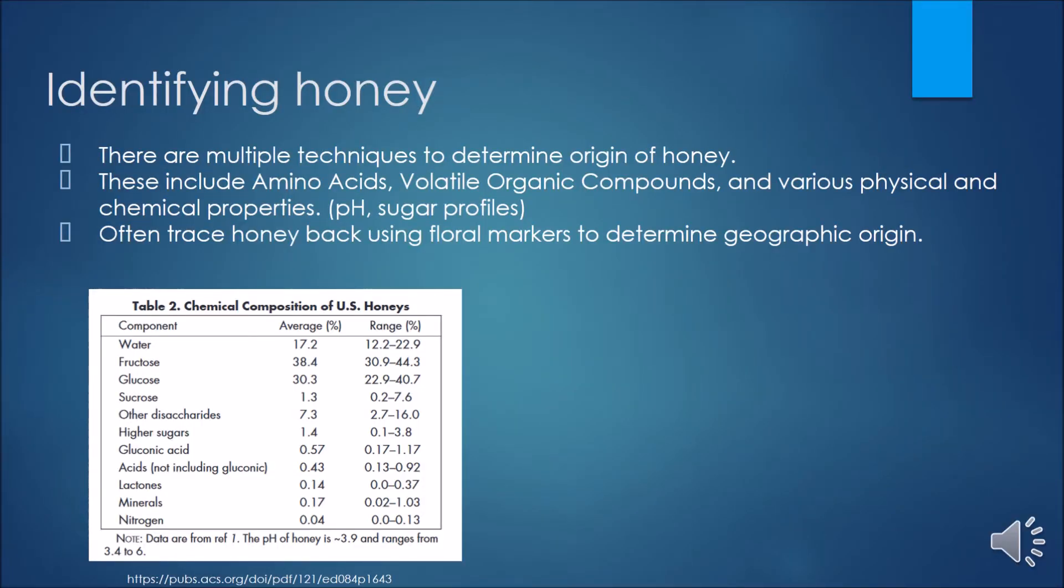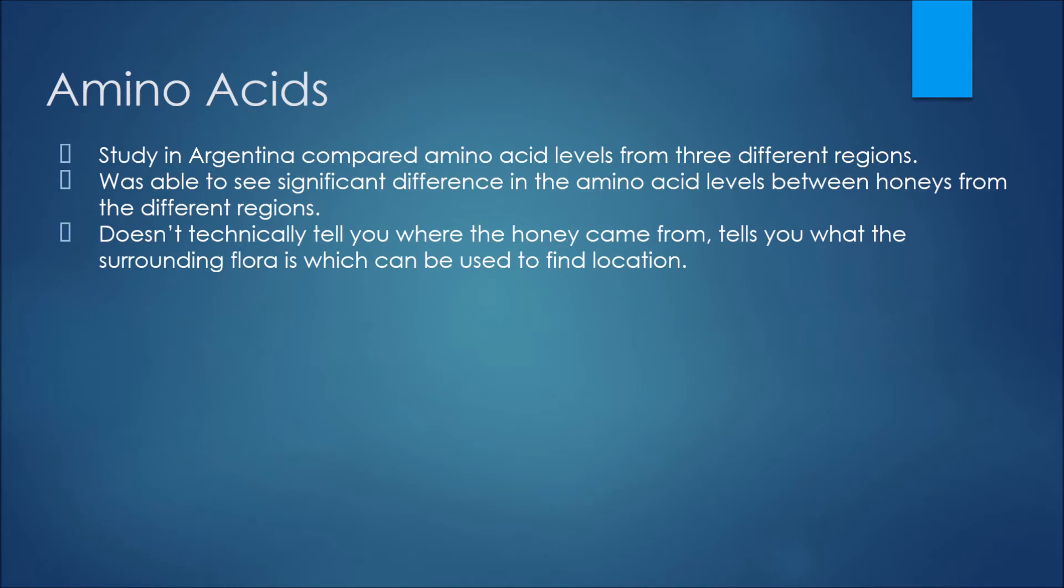Another interesting aspect of honey is that you can determine where it came from based on its chemical makeup. There are a few different methods for doing this, but the ones we will talk about today are using amino acids and using volatile organic compounds. These methods use floral markers to find what plants the honey was around when it was turned into honey. The first method is amino acids. A study in Argentina found that when examining honey from three different regions in Argentina, they all had different levels of amino acids. Because of their knowledge of the flora of those regions, they were able to determine which samples of honey came from each different region. This method does only work if you know the floral makeup of the region, as the flora is what contributes to the amino acid levels in honey. Because of this, it doesn't directly tell you where they came from geographically.